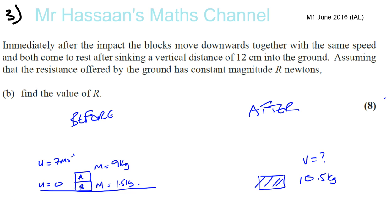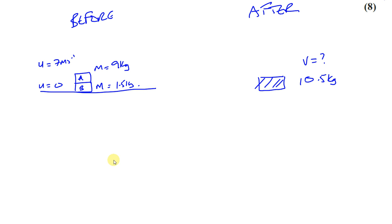So we can use the law of conservation of momentum. The momentum before and after must be the same. So the total momentum before the collision is going to be 9 times 7 plus 1.5 times 0, and that's equal to the total momentum after the collision which is 10.5 times V.